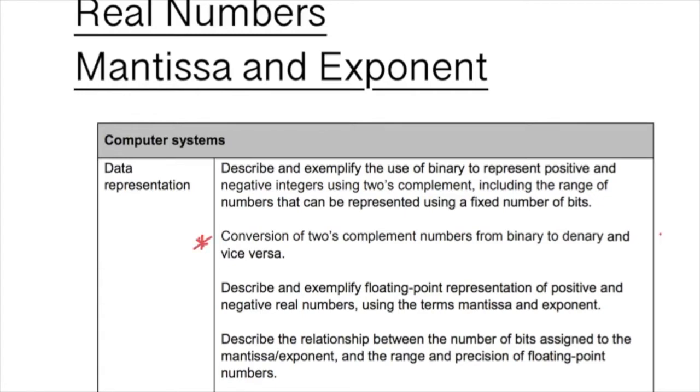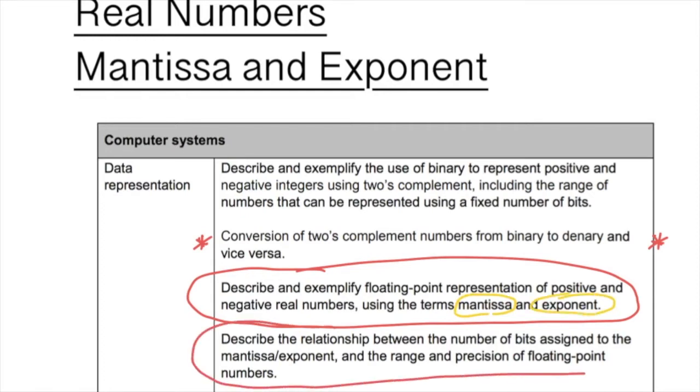This is the part of the arrangements that we are looking at today: describe and exemplify floating point representation of positive and negative numbers using the terms mantissa and exponent. The one underneath as well we're going to have a look at: describe the relationship between the number of bits assigned to mantissa and exponent and the range and precision of floating point numbers.